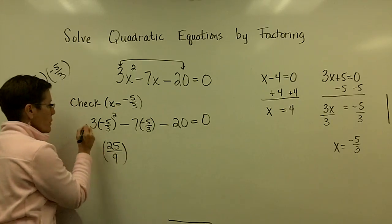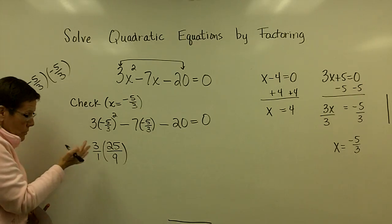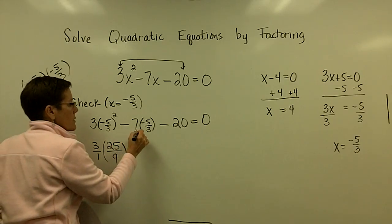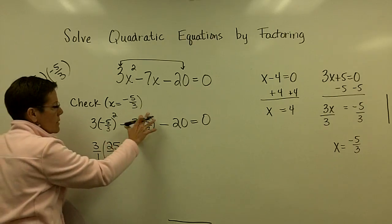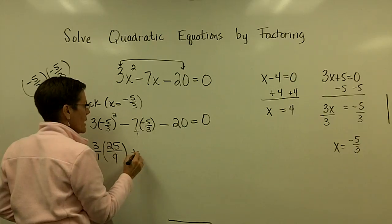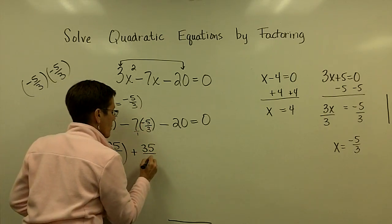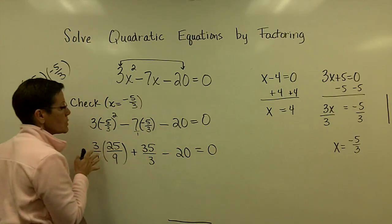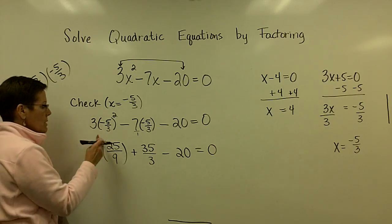There is a 3 out in front here. If you need to put it over 1 so that you keep it up in the numerator, that would be great. This is 7 over 1, and I'm going to go ahead and multiply because the order of operations says to multiply. I'm going to take this negative times this negative and write it as a positive, and 7 times 5 is 35 over 3.